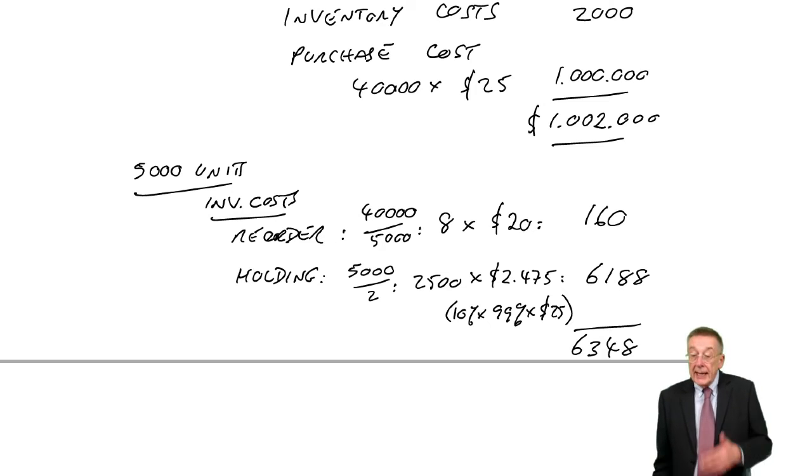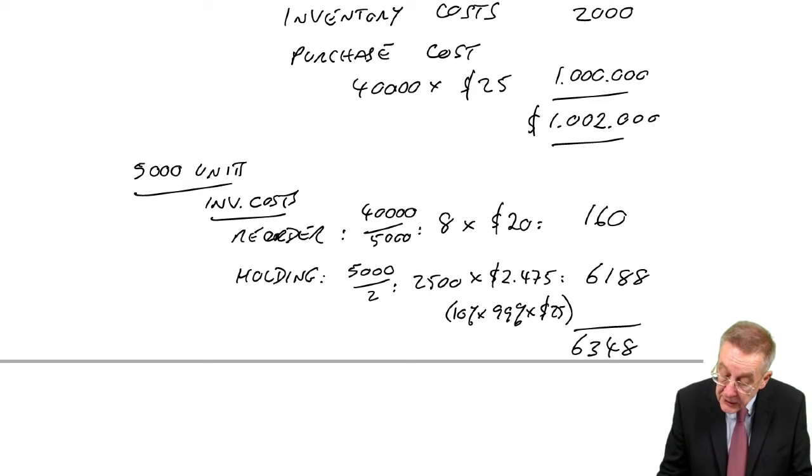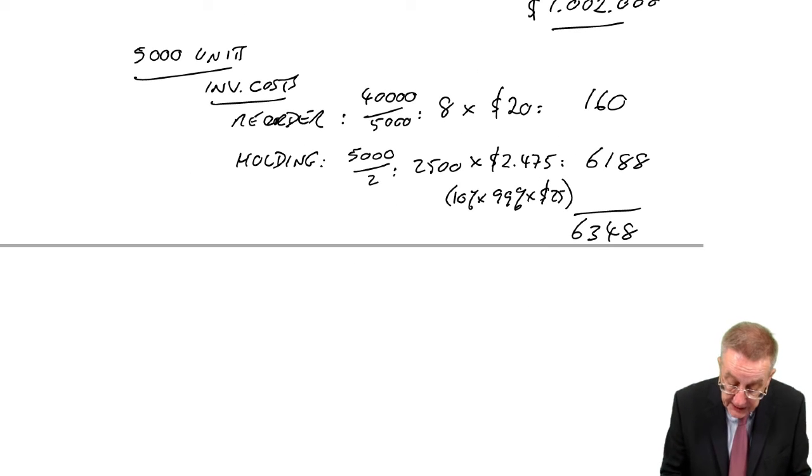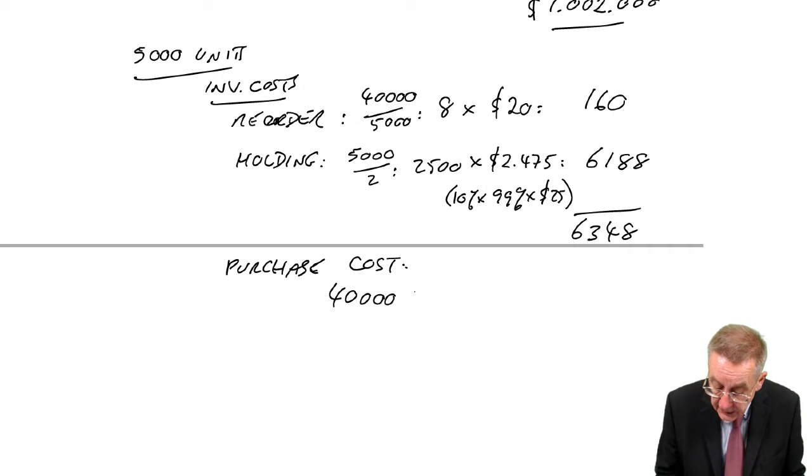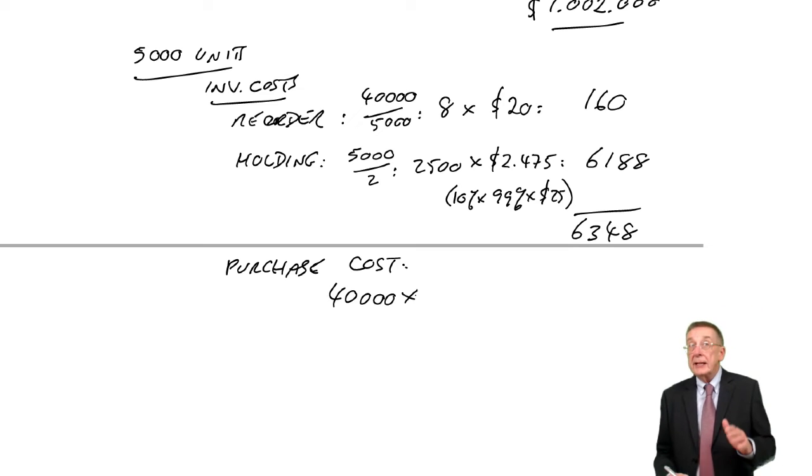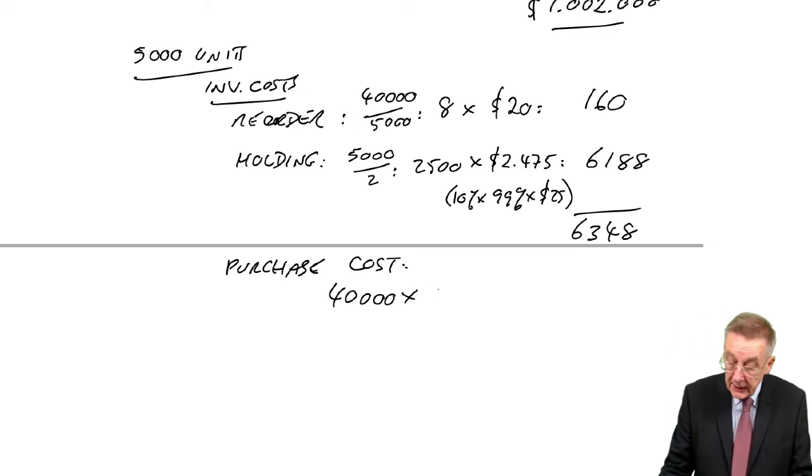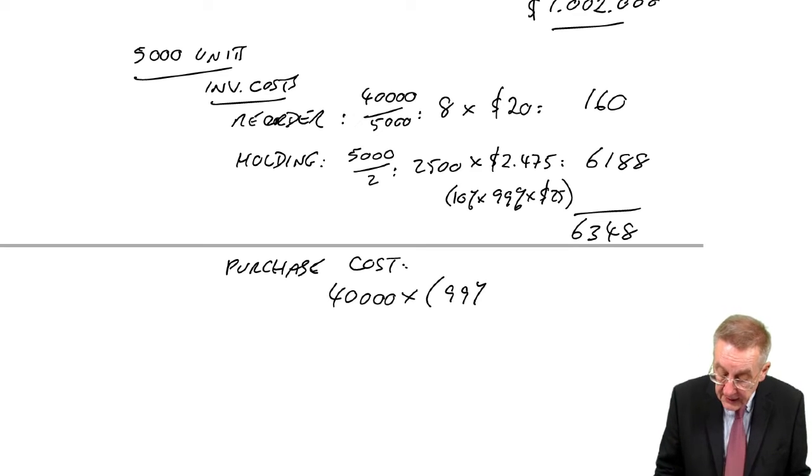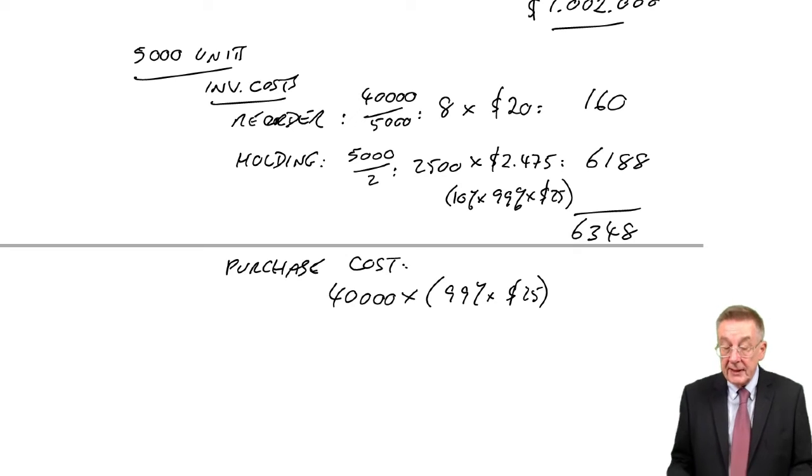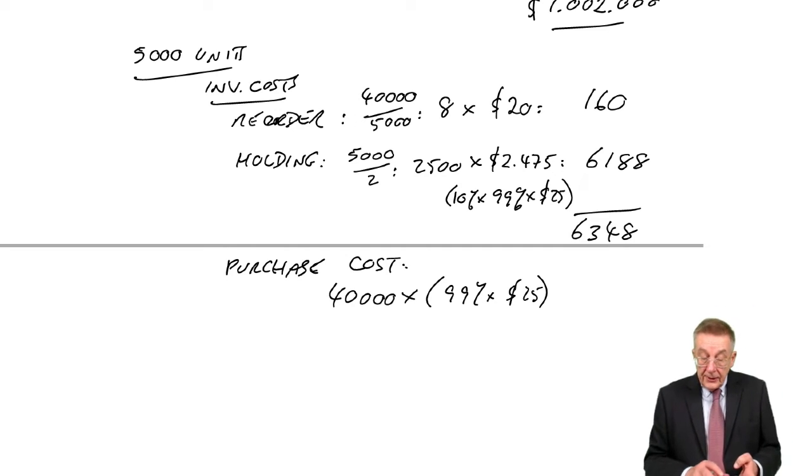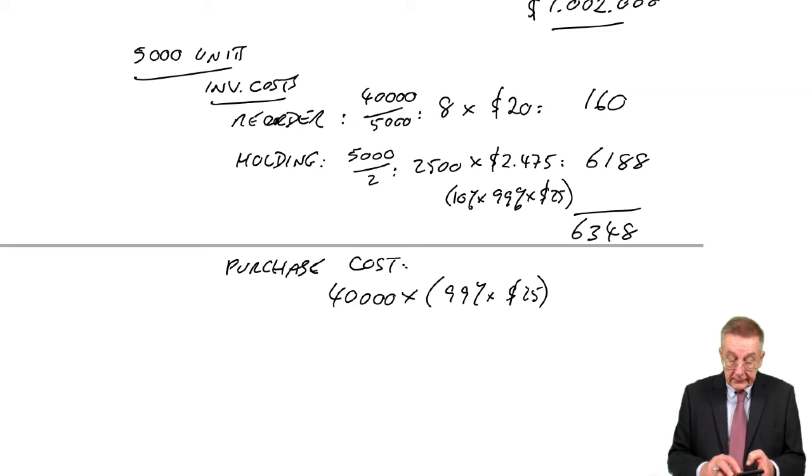However, as I said earlier, it could be worth paying that extra inventory costs. Because over the year, the purchase cost now is going to be lower. Still buying 40,000 units, but instead of paying $25 a unit, with a 1% discount, we're only paying 99% of $25. So the purchase costs will be lower. It'll be $990,000.